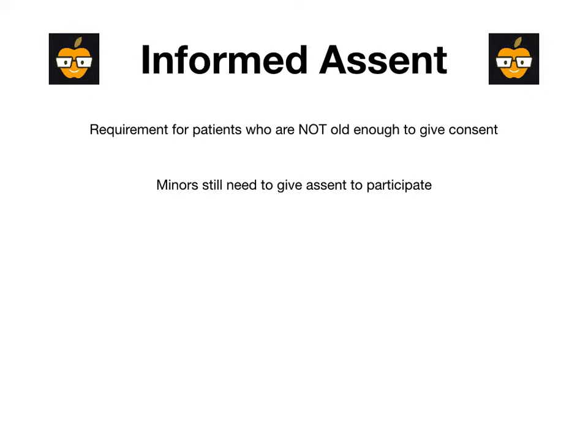This typically applies to someone less than 18 years of age who is not emancipated. Even though a minor can't legally give informed consent, they can certainly give informed assent. This is a requirement for patients who are not old enough to give consent. Minors still have to give their informed assent to participate in anything that could be perceived as high risk. You can't just do something to a child because the parents say to — you have to explain exactly what's going to happen, and if they don't want it done and it's high risk, you must get their informed assent.